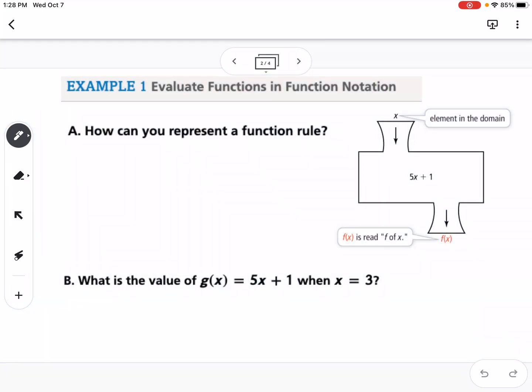Example 1 says, how can you represent a function rule? You can see here, this is our function machine. So x goes into the function, and then you have some sort of function for every function machine. And f of x comes out, so that is your output. You have your input of x, you have your output of f of x.